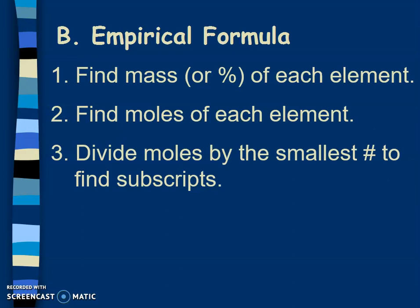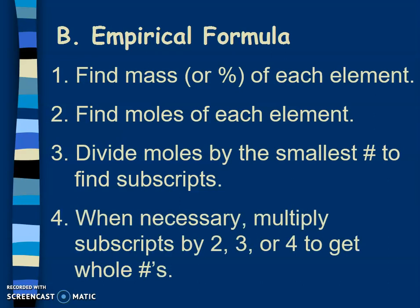Then we are going to divide moles by the smallest one to find your subscripts. When necessary, we'll multiply our subscripts by 2, 3, or 4 to get whole numbers. So sometimes in step 3 you won't get all whole numbers - you may get like 2.5. If that's the case, you can't have half of an atom, so we multiply until we get to a whole number.